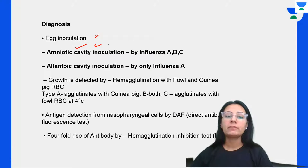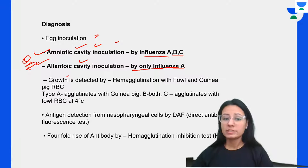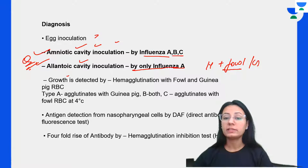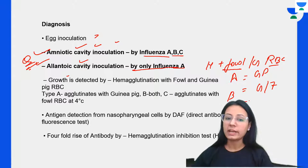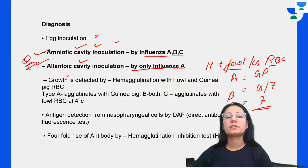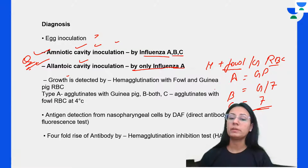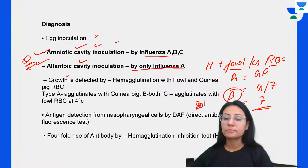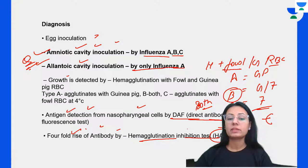For diagnosis, egg inoculation is done via the amniotic cavity for influenza A, B, and C, and the allantoic cavity for influenza A only. Growth is detected by hemagglutination with fowl and guinea pig RBCs. Type A agglutinates with guinea pig RBCs; type B agglutinates with both guinea pig and fowl RBCs; and type C agglutinates with fowl RBCs only. Antigen detection from nasopharyngeal cells is done by DAF, and a four-fold rise in antibody is detected by hemagglutination inhibition test.